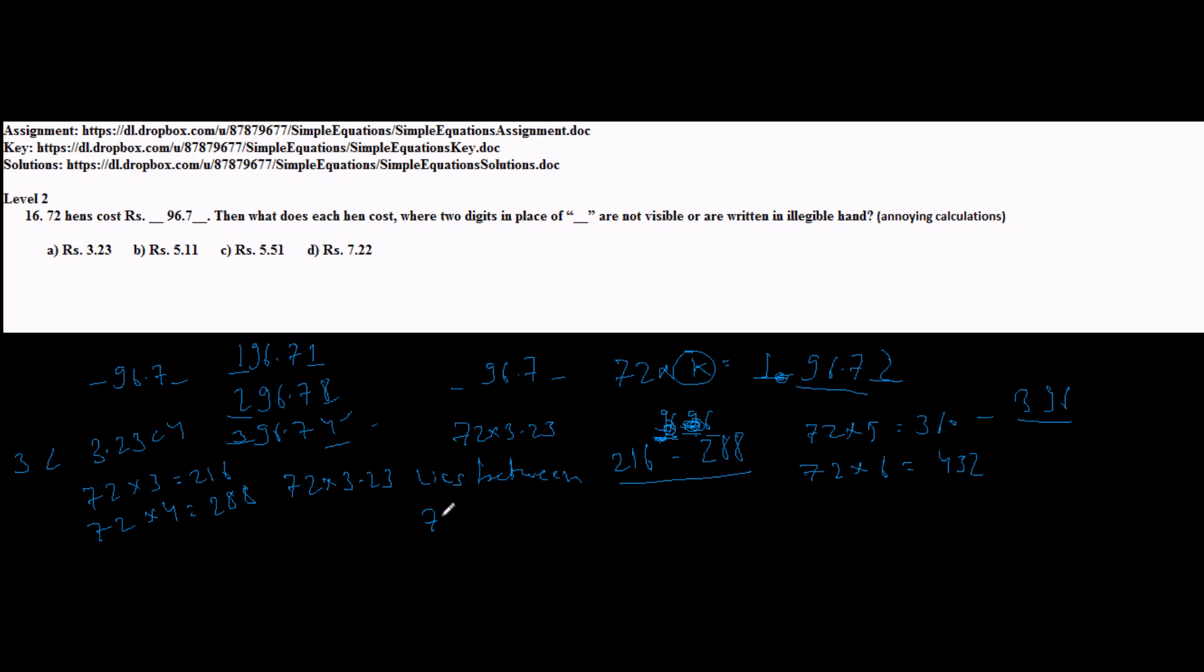Coming to D, 72 into 7 is 504, 72 into 8 is 576. So since again 96 does not lie between 504 and 576, therefore this also cannot be my answer.